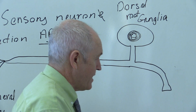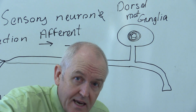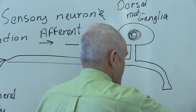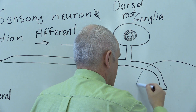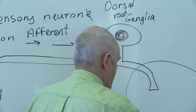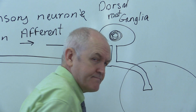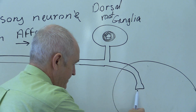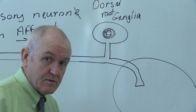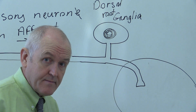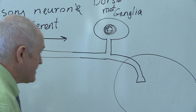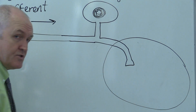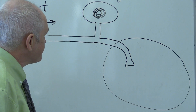If we're looking at a particular level of the spinal cord in cross section, the sensory neuron has taken the information into the spinal cord. From there, that sensory information can travel up towards the brain.